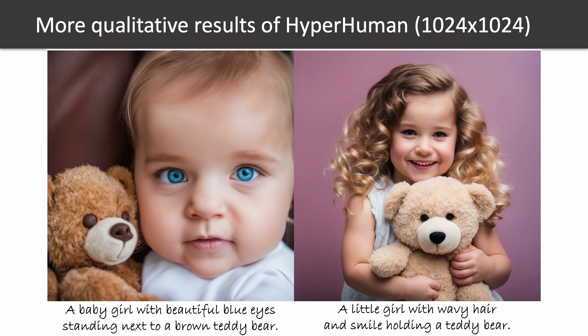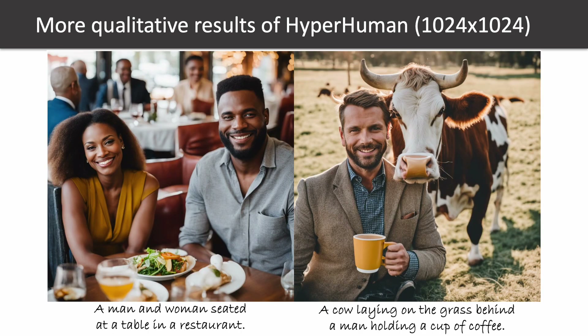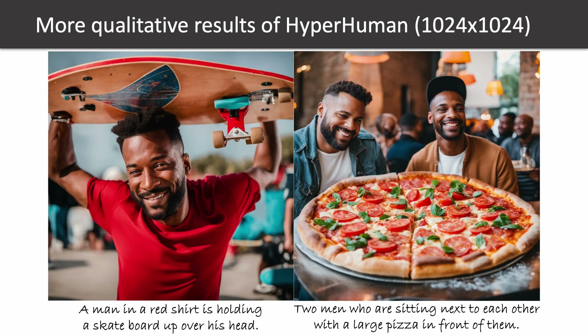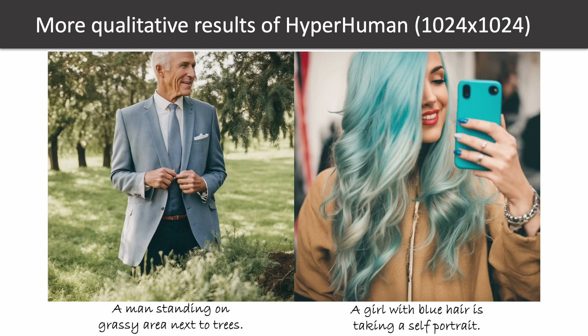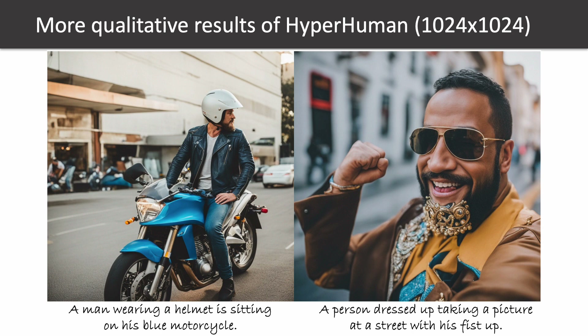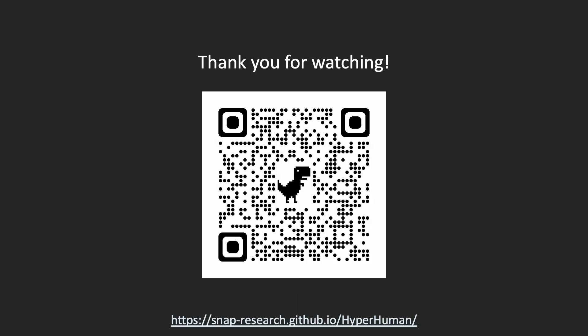Below, we show more qualitative results of Hyperhuman at 1024 resolution. We managed to synthesize realistic human images of various layouts under diverse scenarios, for example, different age groups including babies, children, young people, middle-aged people, and elderly persons, as well as different contexts such as canteen, in-the-wild roads, snowy mountains, and street view. Thank you for watching this video, and please kindly refer to our project website for more details and results.